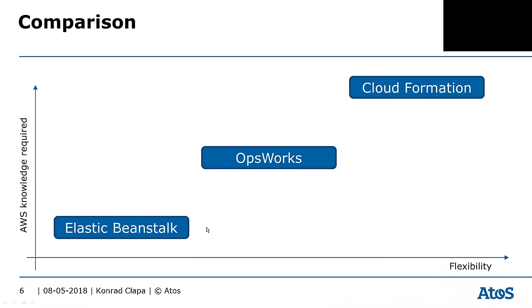What's interesting: when you deploy your Beanstalk environments, you'll see it's actually using CloudFormation in the backend. So it's much less flexible and doesn't offer you as much as CloudFormation does. The next technology is OpsWorks — it's basically a configuration-as-code technology.